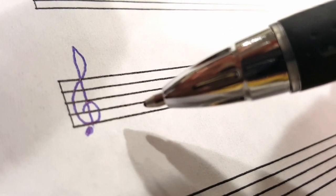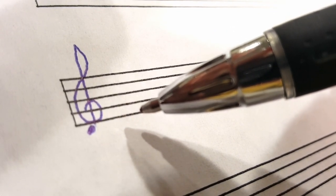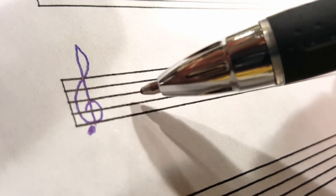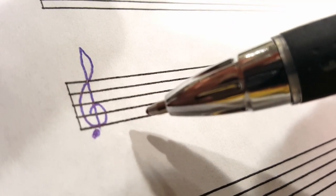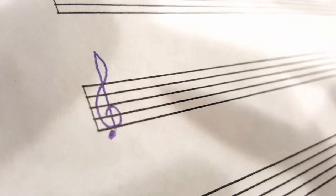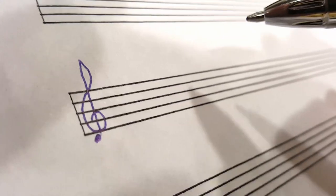Notes can be written either on a line, which are one of these five lines, or in between two lines, which indicates a space.